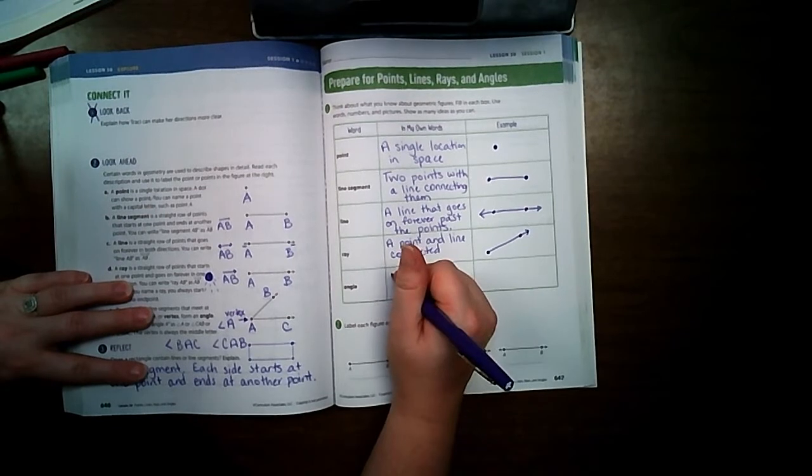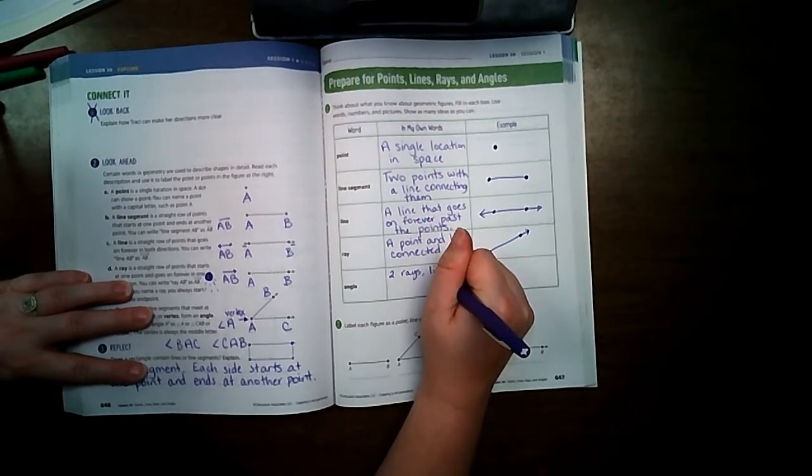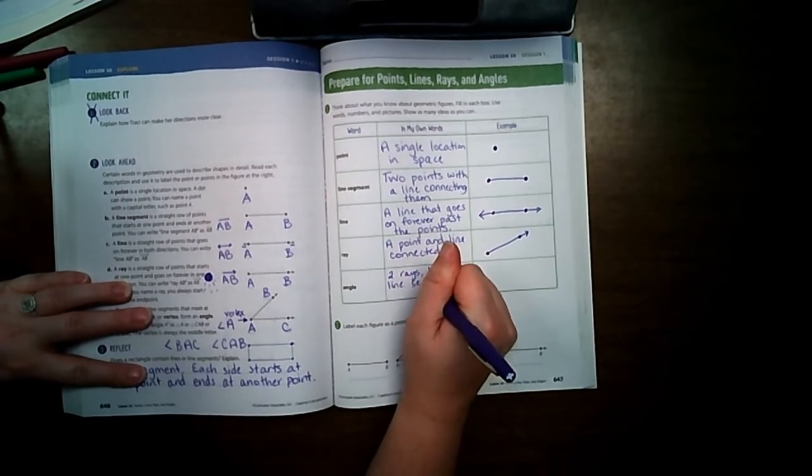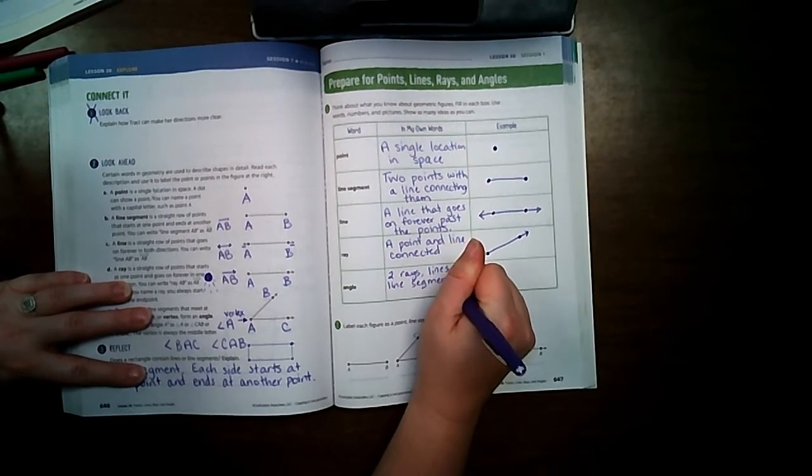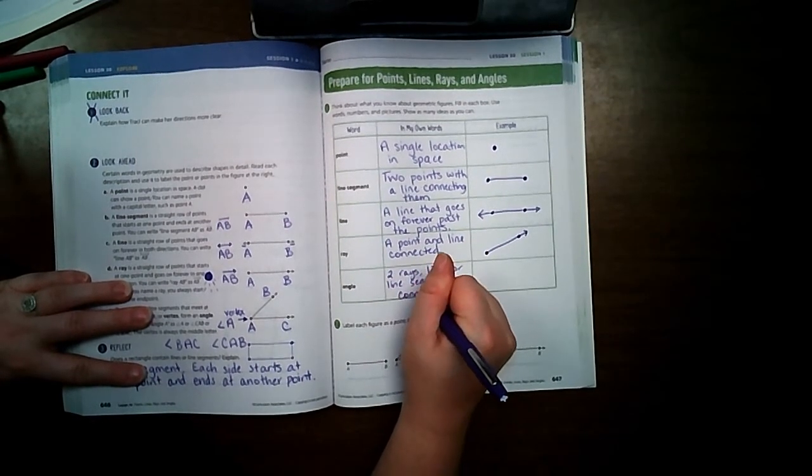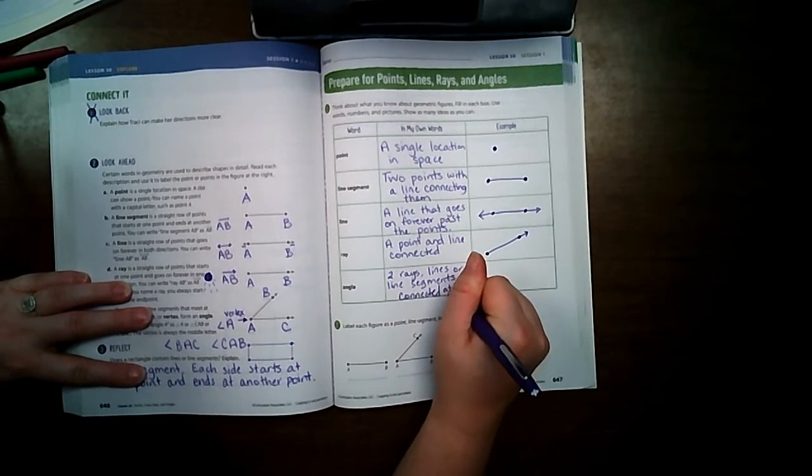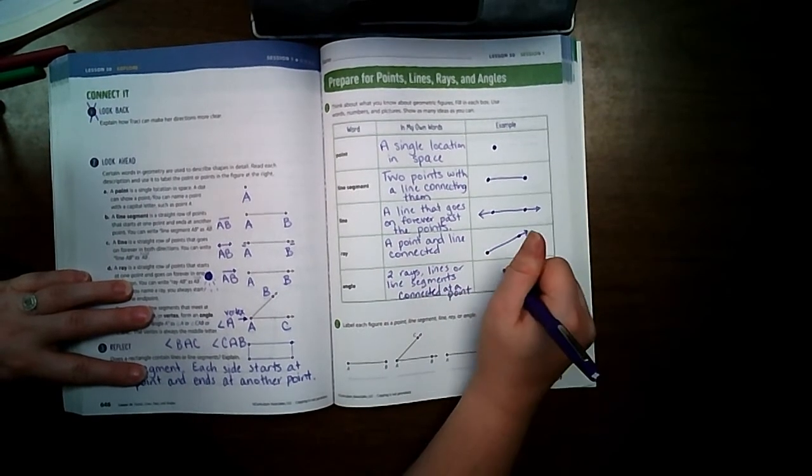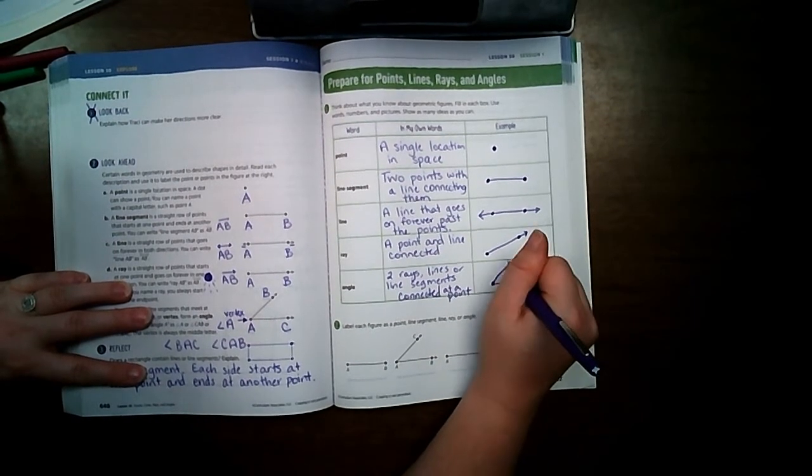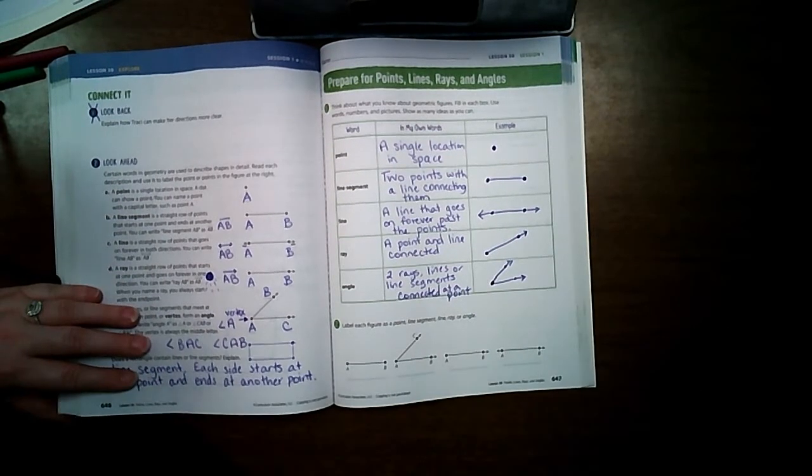We've got our point and our line that are connected. And an angle is two rays, lines, or line segments connected at a point. Let's do rays, so this is an angle.